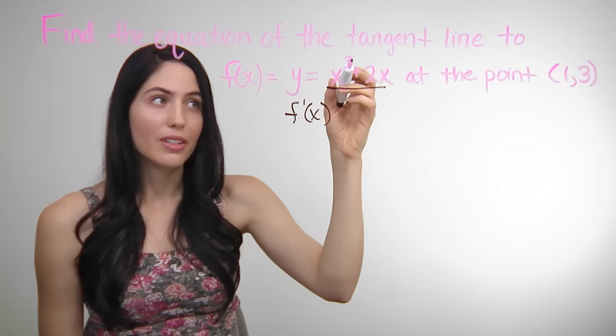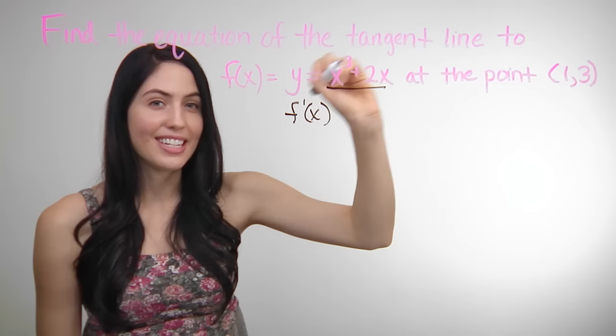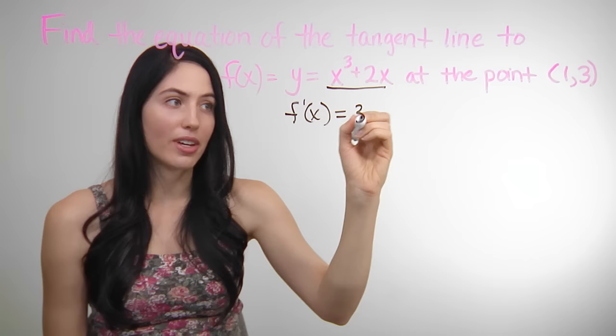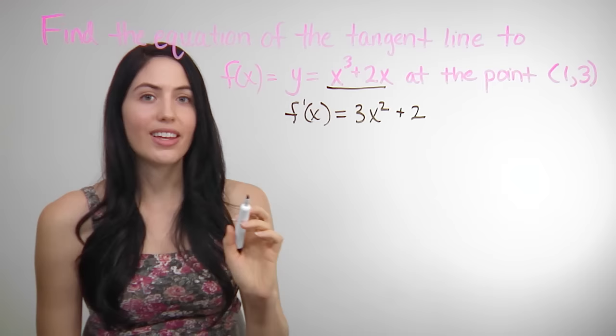The derivative of x cubed — remember with the power rule, you bring the power down and then decrease that power by 1. So for the first term we have 3x squared. For the second term, the derivative of 2x is just 2. The x goes away. We have 3x squared plus 2. So that's your derivative, your f prime of x.